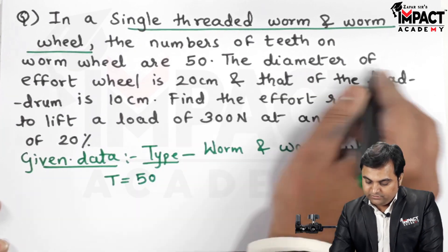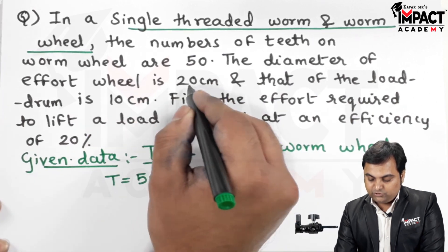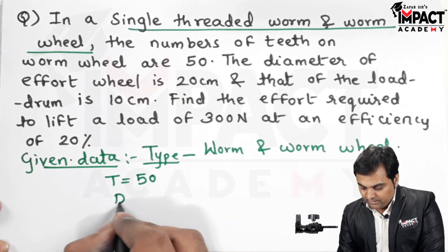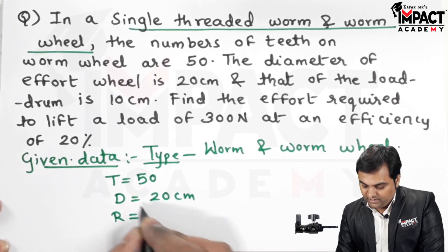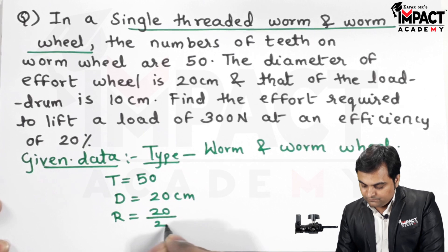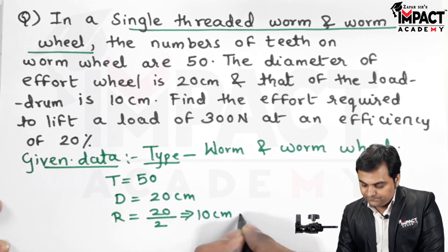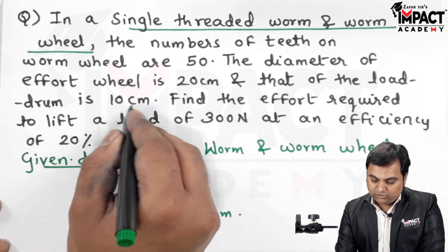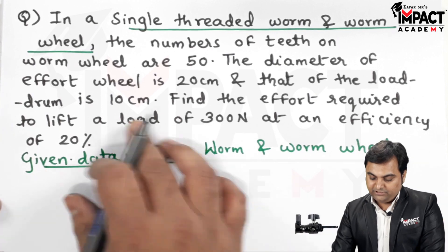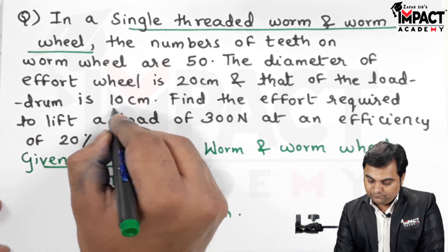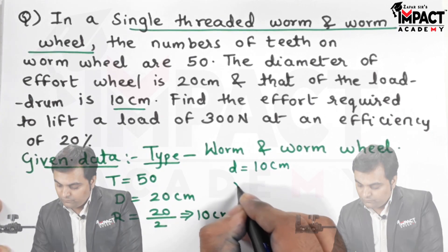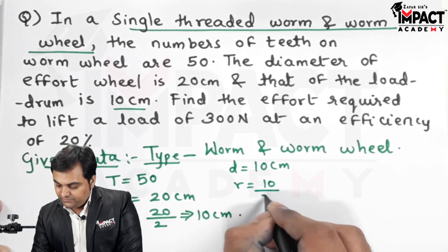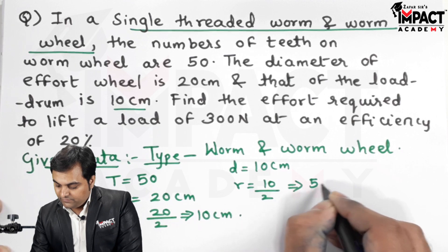The diameter of the effort wheel is 20 centimeter, capital D 20 centimeter, so the radius would be half of this diameter, 10 centimeter. And that of the load drum is 10 centimeter, so the diameter of the load drum is 10 centimeter, that is small d, so small radius would be 10 by 2, that is 5 centimeter.